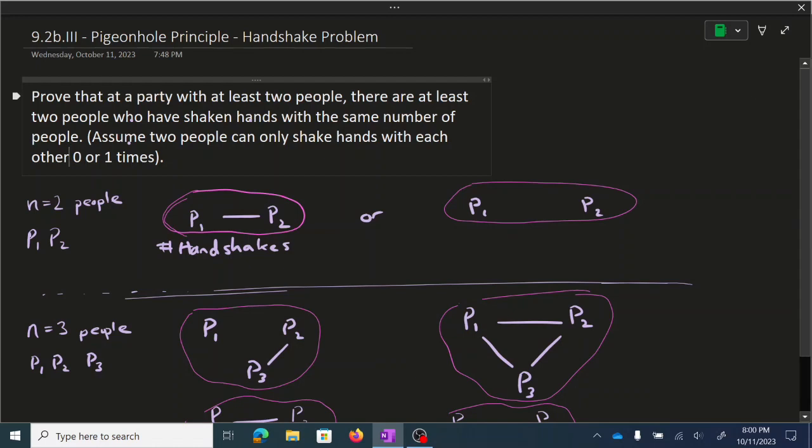So that's the problem statement. Prove that a party with at least two people, it could be three, four, there are at least two people who have shaken hands with the same number of people. Assume two people can only shake hands with each other zero or one times.